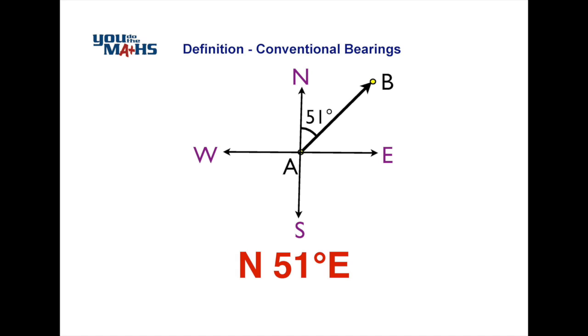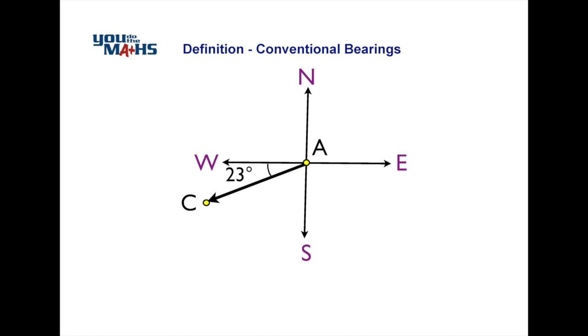Let's have a look at another example. In this case we place where we started, point A, at the center of our compass bearings. We're heading in a southerly direction, but it's not clear what the angle difference is between south and where we're heading towards point C.